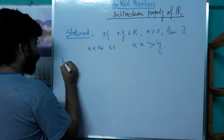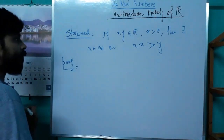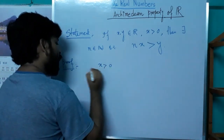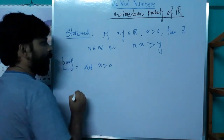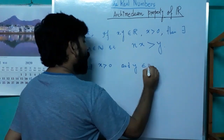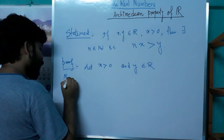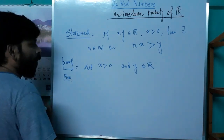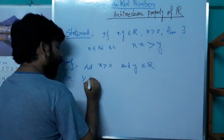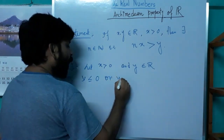Proof. Given that x is a positive real number and y is any real number. By the law of trichotomy, we know that either y is less than or equal to 0, or y is positive.